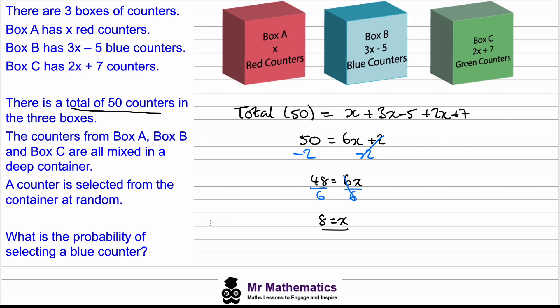But the question we were asked is, what is the probability of selecting a blue counter? So the probability of blue - we know we have 50 in total. To work out the number of blue, we can substitute this 8 back in. So we'll have 3 lots of 8 minus 5, which is 24 minus 5, equals 19. So the probability is 19 over 50, and this is a perfectly valid final answer.